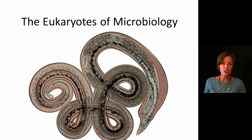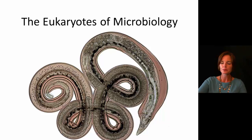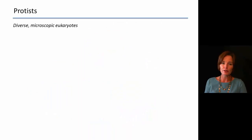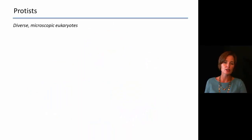There are also going to be some animals included here. The one we're seeing on this slide would be considered an animal, but it's going to be pretty small. Now if we talk about the protists first, they are going to be very diverse — they are the most diverse of all the eukaryotes and are just really microscopic eukaryotes.